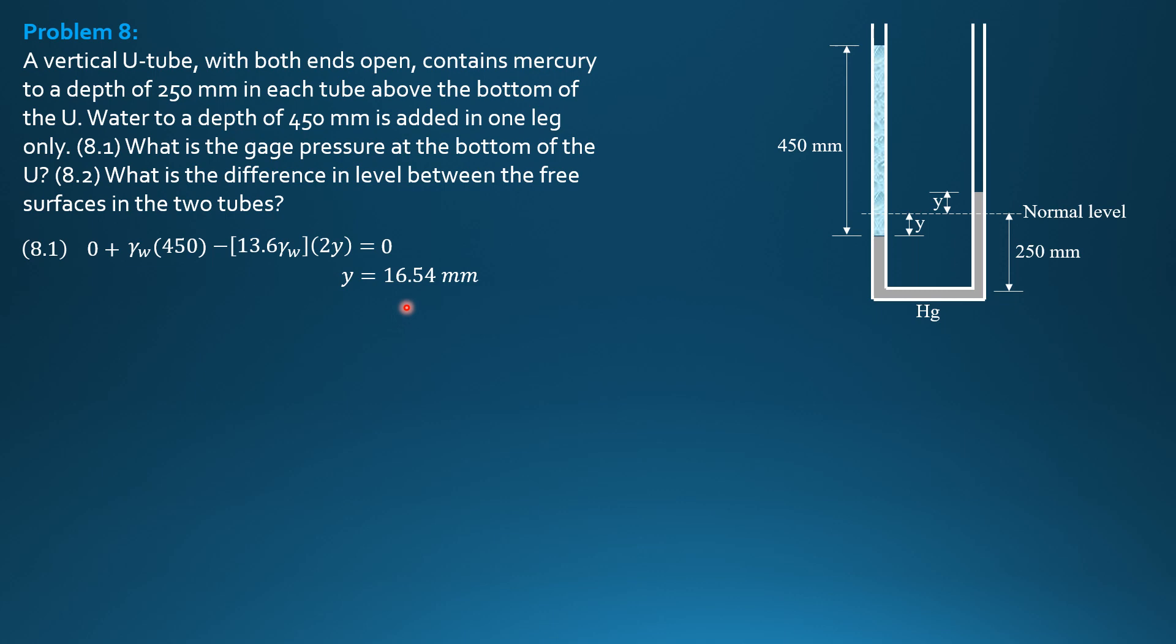Therefore, we can now compute the gauge pressure at the bottom. It is equal to 0, plus 9.81, times 0.45 this time, because we want to compute the pressure in kilopascals, plus 13.6 times 9.81 times this distance, which is quantity 0.25 meter minus Y. And Y is 0.01654 meter,